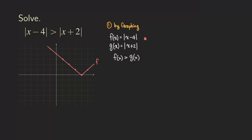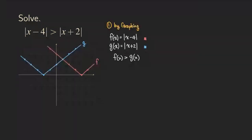Now I'm going to graph g in blue. That plus 2 moves the parent function y equals absolute value of x two units to the left, so counting 1, 2, the vertex is right here. Starting from the vertex, you still get a V-shaped curve. Now I'm going to plot all these points. So as you can see, this blue V is g, and now you have those two functions.